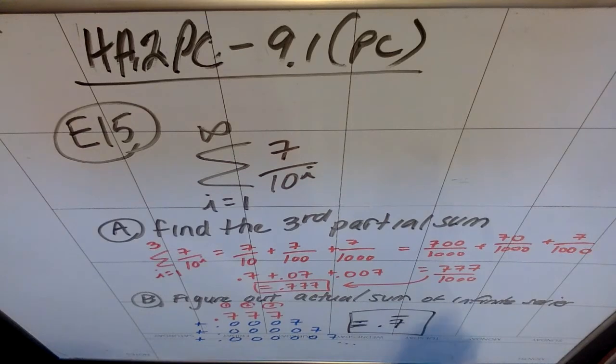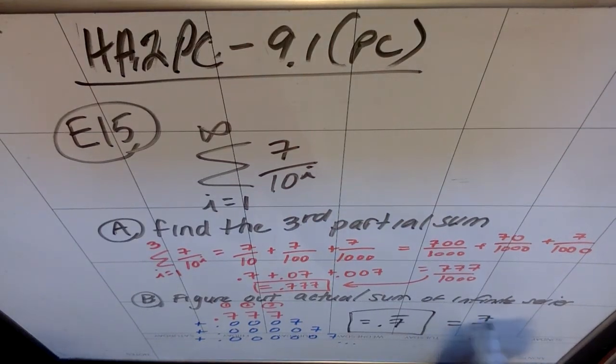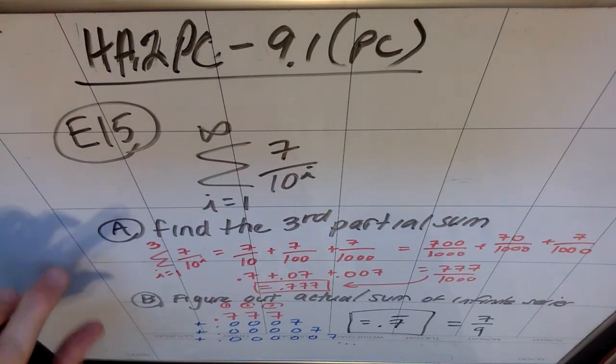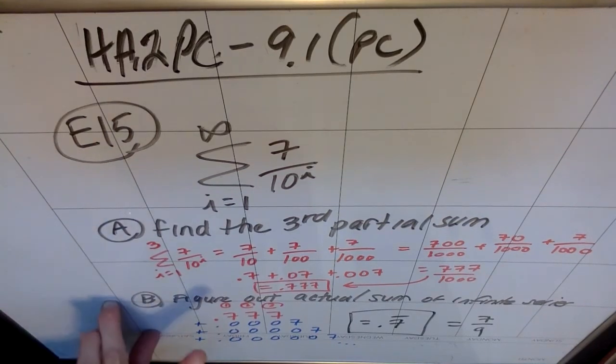This thing sums to a 0.7 repeating. And actually, and it does, and the answer is if you were finding this as a fraction, it would end up being 7 ninths, which is what 0.7 is repeating. And I can walk you through when we get to 9.3, how we actually find that this is a 7 ninths. So this thing is actually a 7 ninths, which is a 0.7 repeating. So again, this is an example of a partial sum. It was only the first three terms. This is an example of an infinite sum.